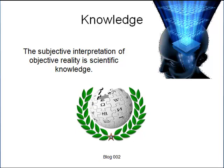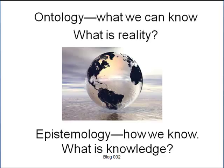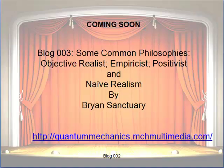The subjective interpretation of reality is knowledge, and the branch of philosophy is epistemology — how we know. In summary, ontology is the philosophy of the state of being, and epistemology is the philosophy of how we know. In my next entry, I'll discuss some common philosophies of science to see what they mean.